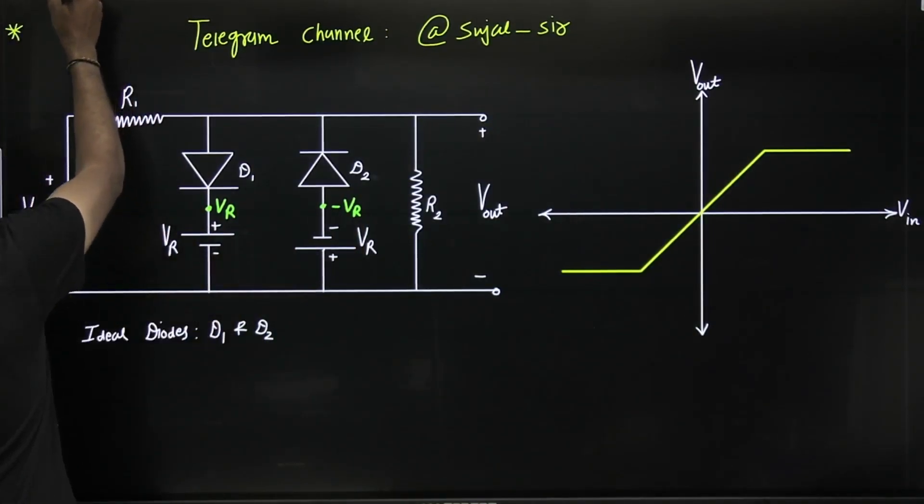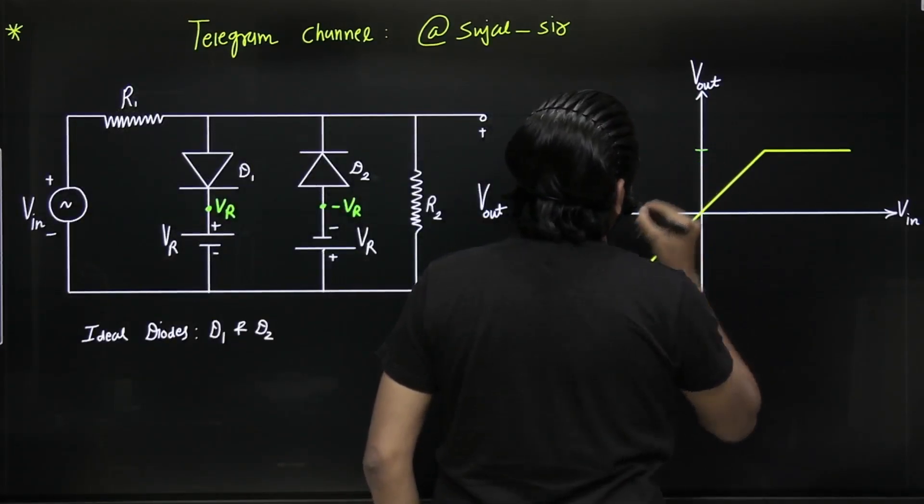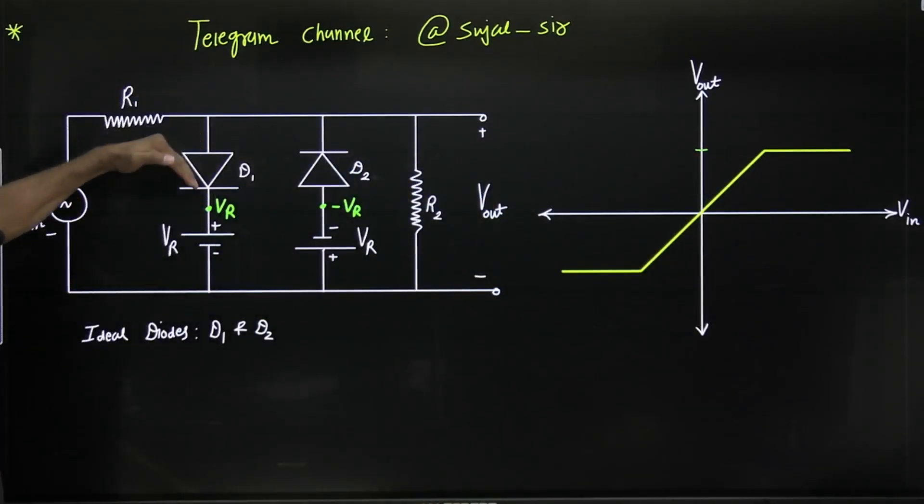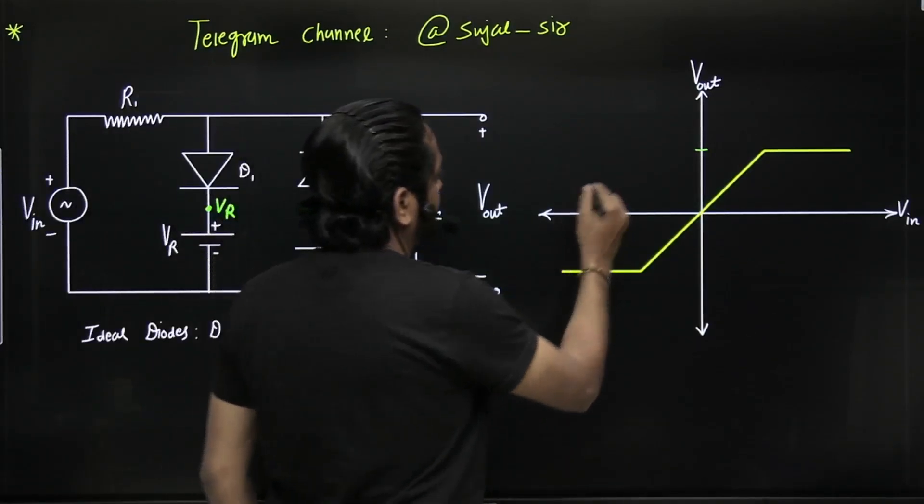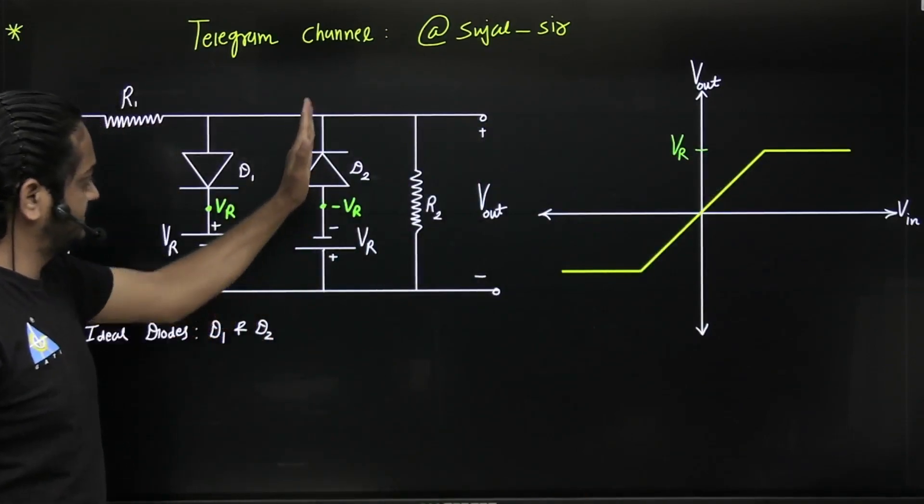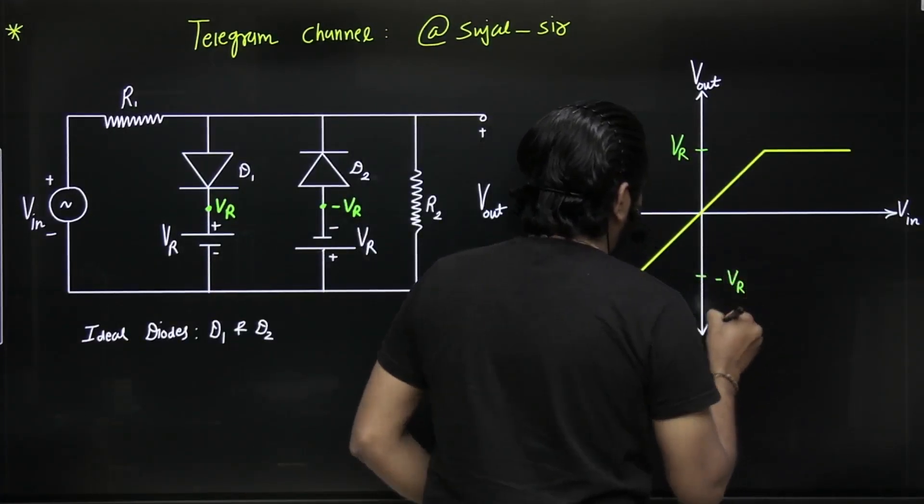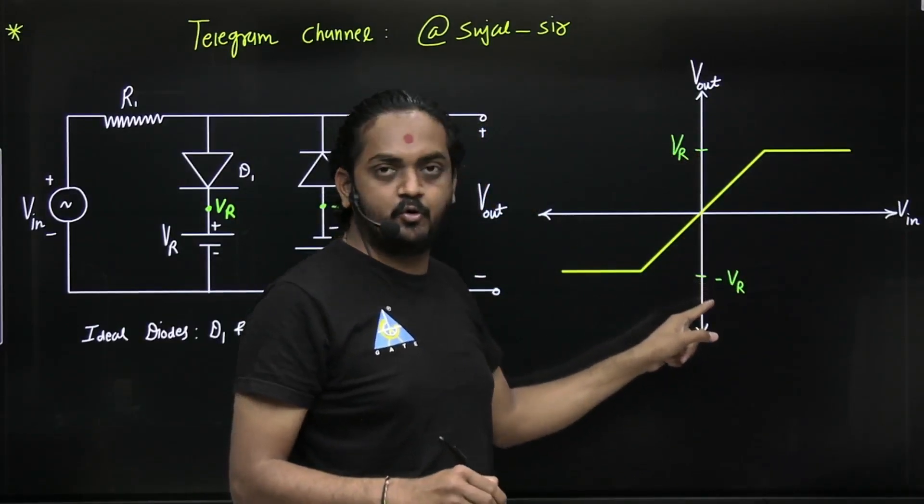Now see, this is the characteristic. Always. What about y-axis value? So here, y-axis value, downward direction diode, so this is plus VR. Always. This is upward direction diode, that's why minus VR.